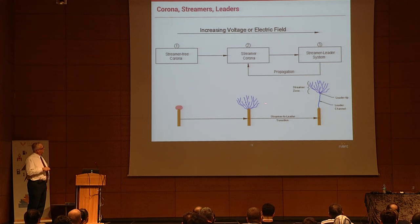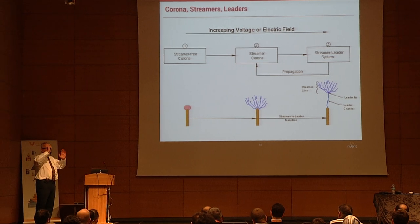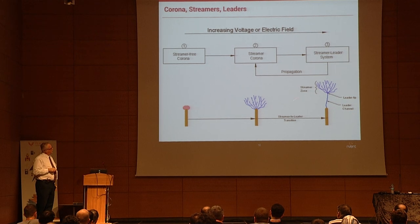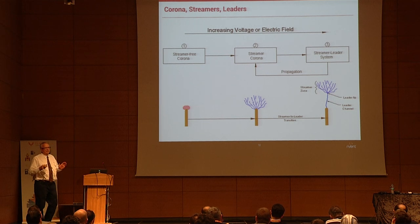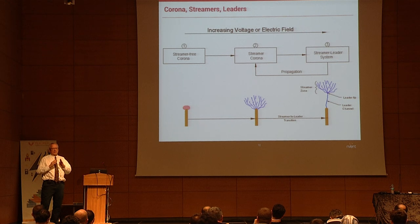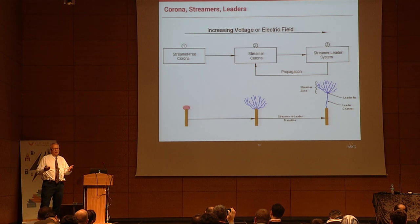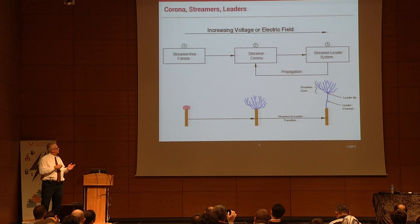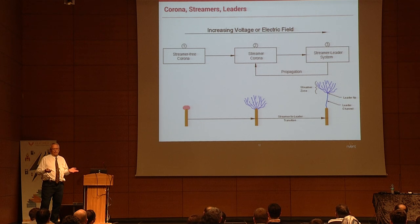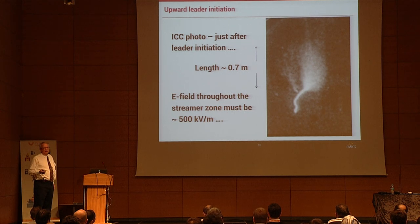The stream-free corona eventually progresses to stream corona, which starts traveling away from the terminal, forming a stream zone with an upward leader. In many cases when the terminal is too sharp, the step from stream-free corona to streamer never happens because the conditions aren't there. It's important that the lightning protection terminal is optimized so that this transition between stream-free corona to stream leader happens in a controlled fashion.